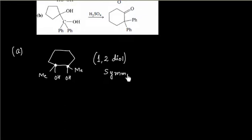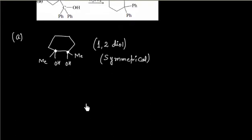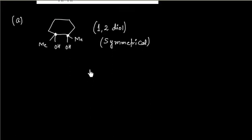This 1,2-diol is a symmetrical diol. If you see this carbon and this carbon, both have identical surroundings, so the 1,2-diol in this case is symmetrical. If you remember the first step of Pinacol rearrangement, it is loss of H₂O by protonation.